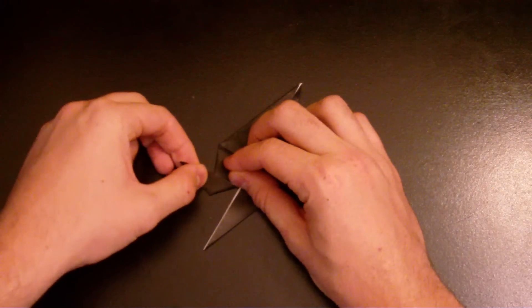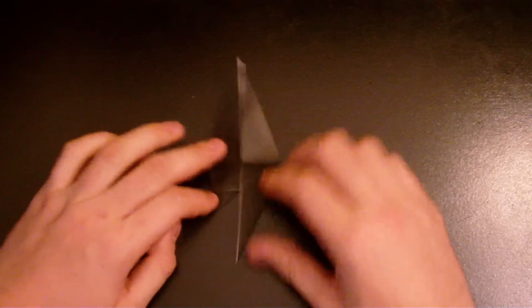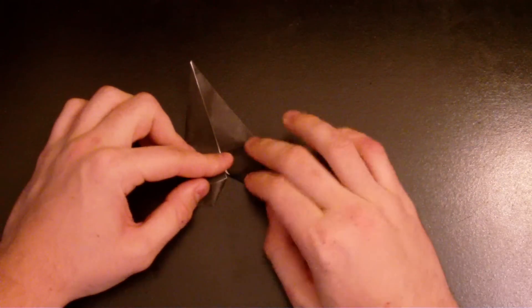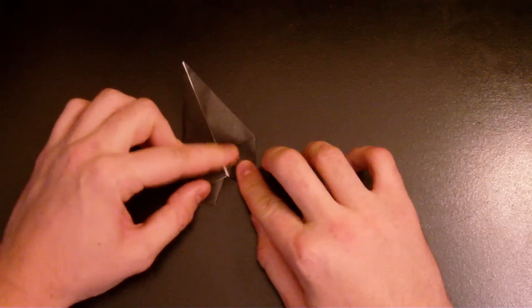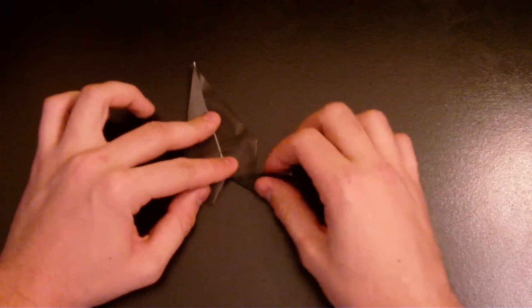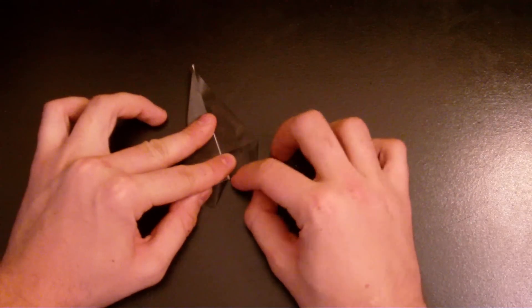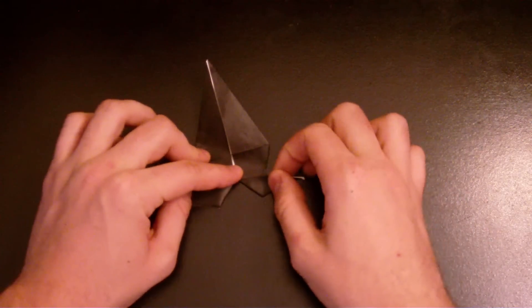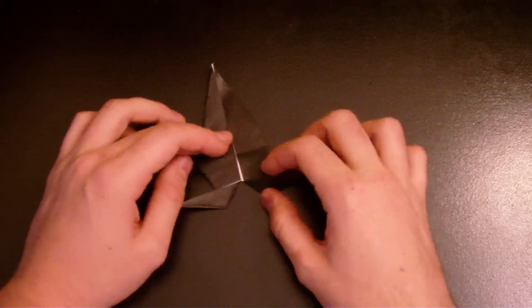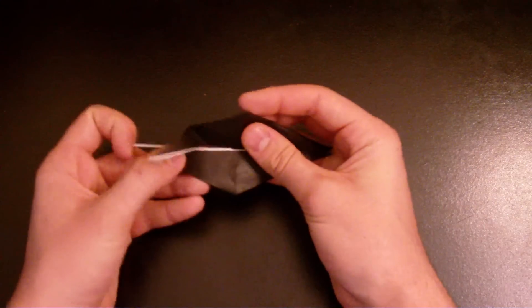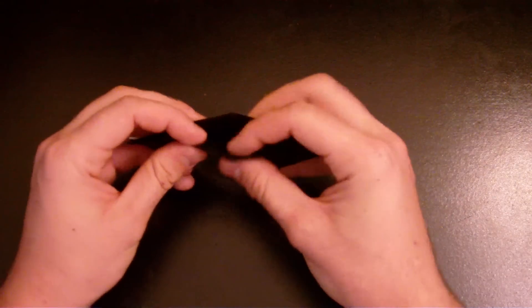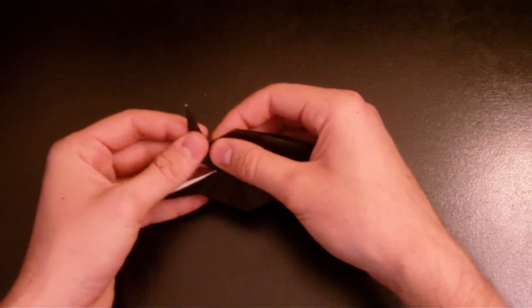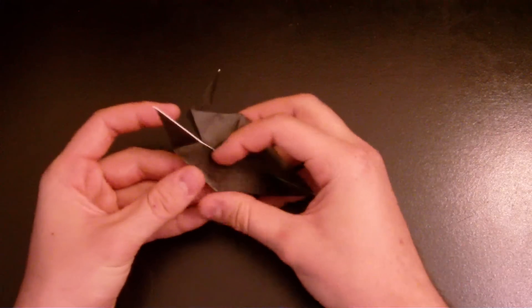Now fold it down this way and same thing over here, hold it like that. Make sure there are parallel lines as close as possible. Now fold it back down, open this one and fold it in like that, and same thing on this side.